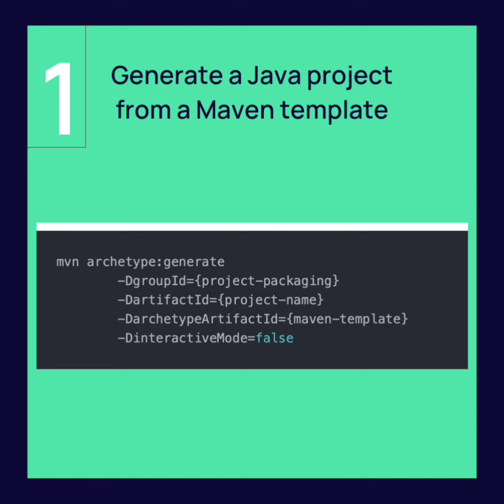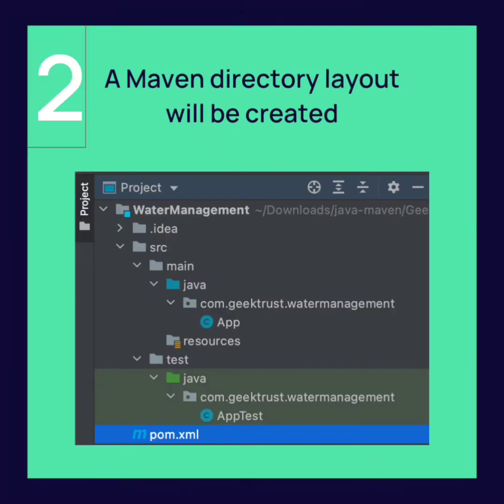In a terminal on Unix or Mac, or the command prompt on Windows, navigate to the folder that you want to create the Java project in and type the command that you see on your screen. This creates a basic directory layout for a Maven project.